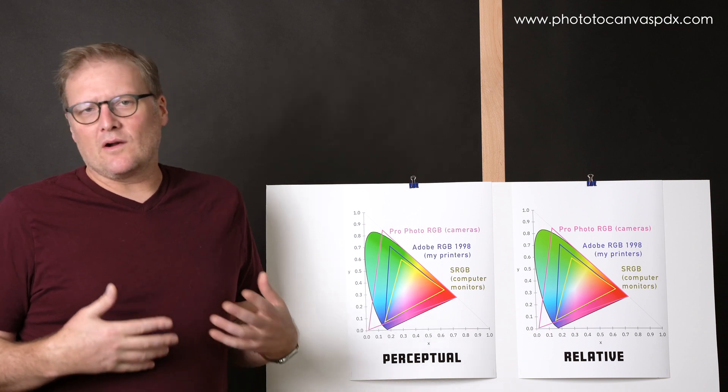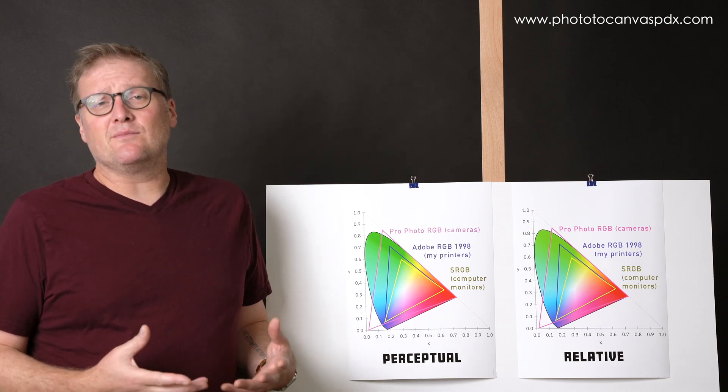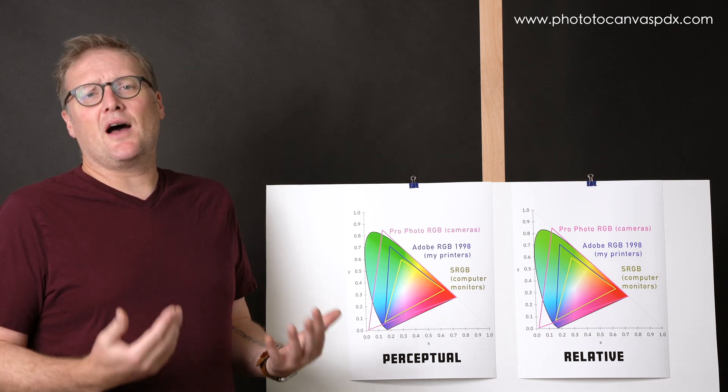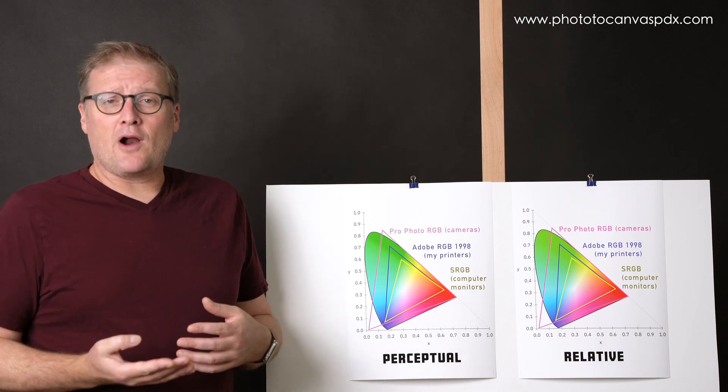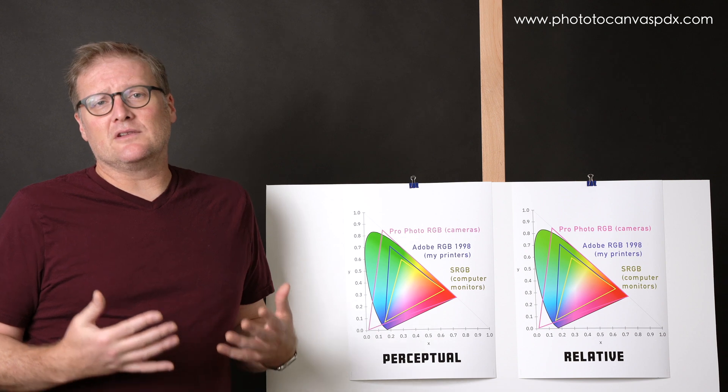So if you've ever printed artwork, photograph, whatever, on a decent printer, your driver is going to give you the option of rendering intent. Now there's usually four options, only two of them regularly are used.